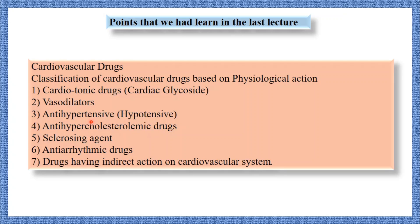The fourth class is anti-hypercholesterolemic drugs. Cholesterol is a steroidal alcohol present in animals; the normal level is 170–200 mg percent. Fats are the main precursor for cholesterol. Excess cholesterol and fat cause atherosclerosis — thickening and hardening of arteries — restricting blood flow, increasing blood pressure, and resulting in various cardiac diseases. Anti-hypercholesterolemic drugs reduce serum cholesterol level and thus prevent atherosclerosis.